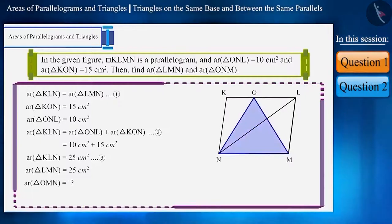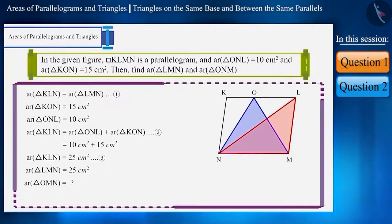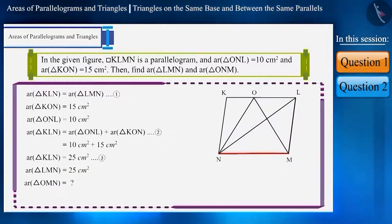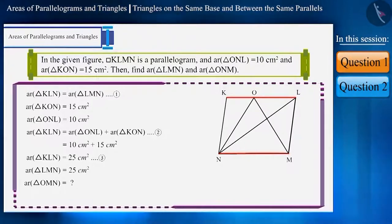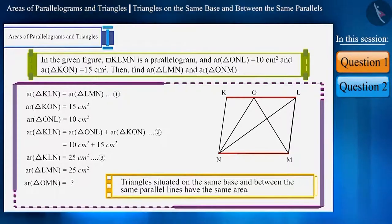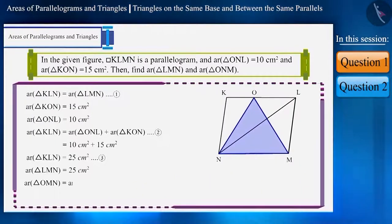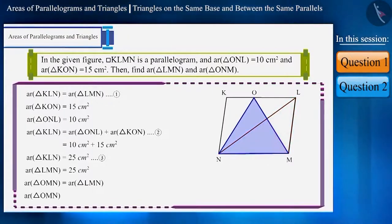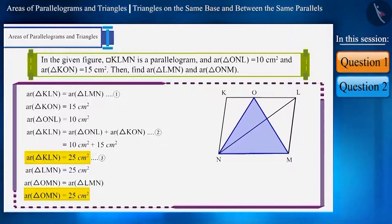Now let's find the area of triangle OMN. We can see that triangle OMN and triangle LMN are on the same base MN, and they are situated between the same parallel lines KL and NM. We know that the areas of triangles on the same base and between the same parallel lines are equal. Therefore, the area of triangle OMN will also be equal to 25 cm².